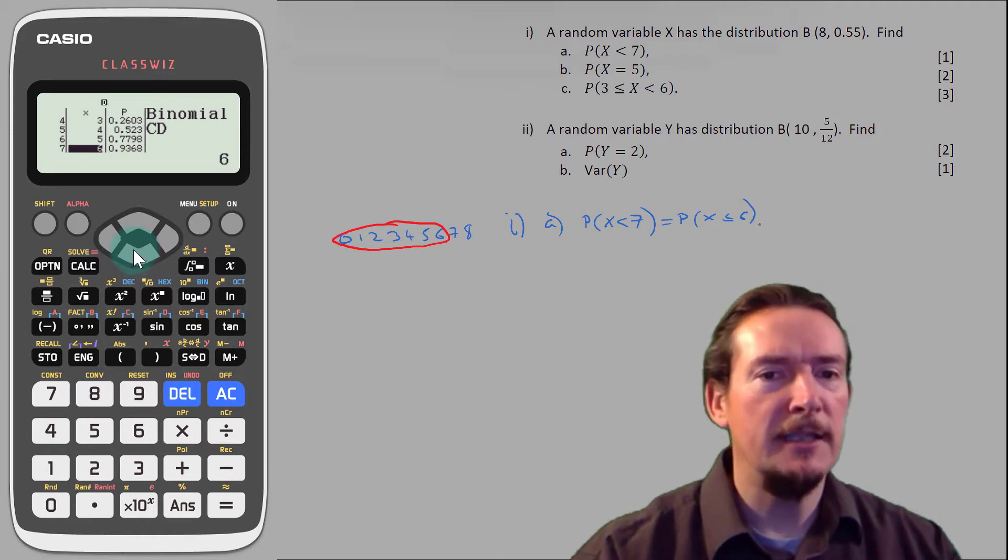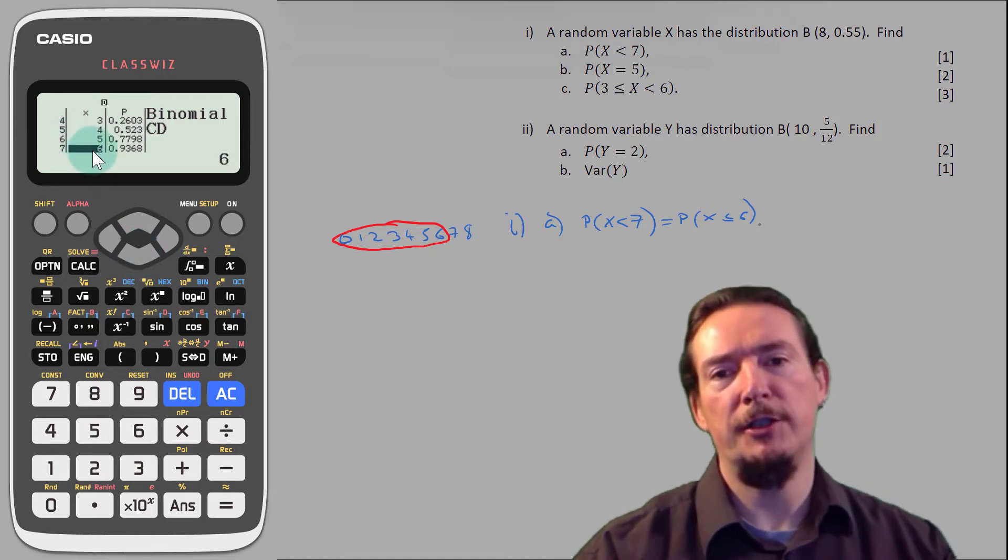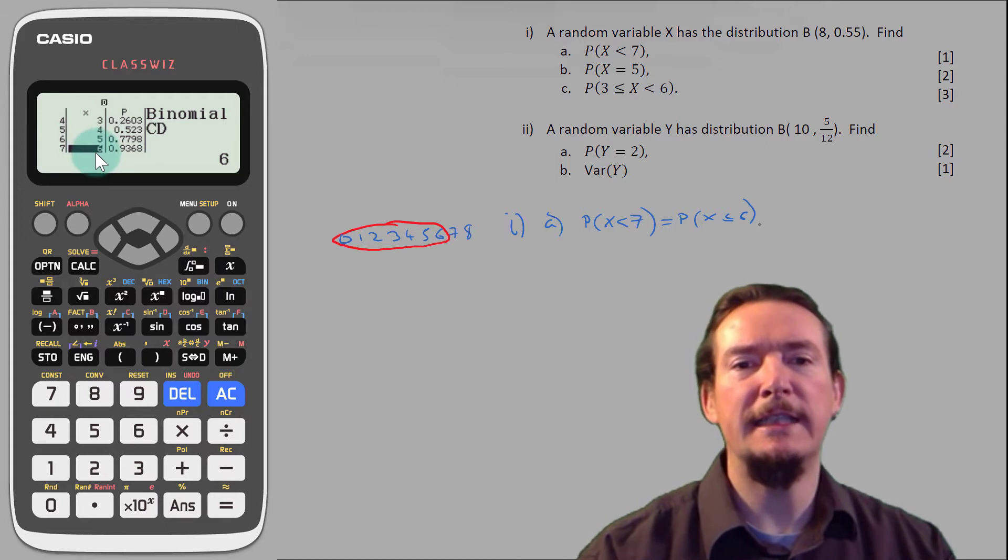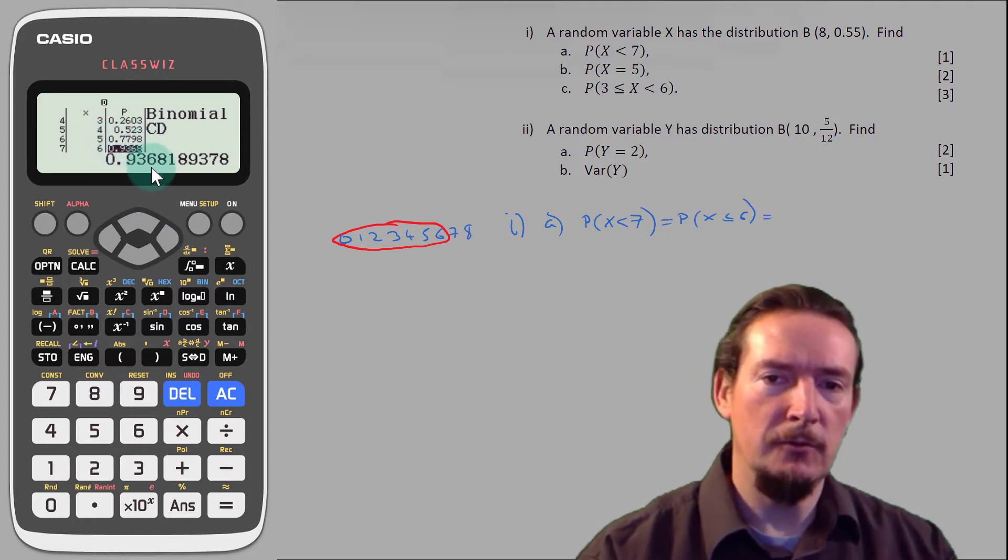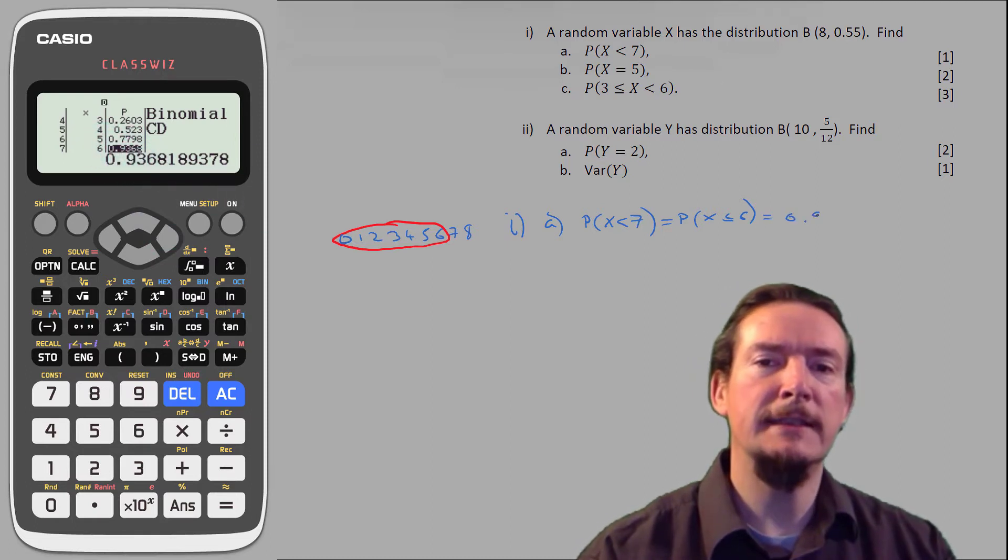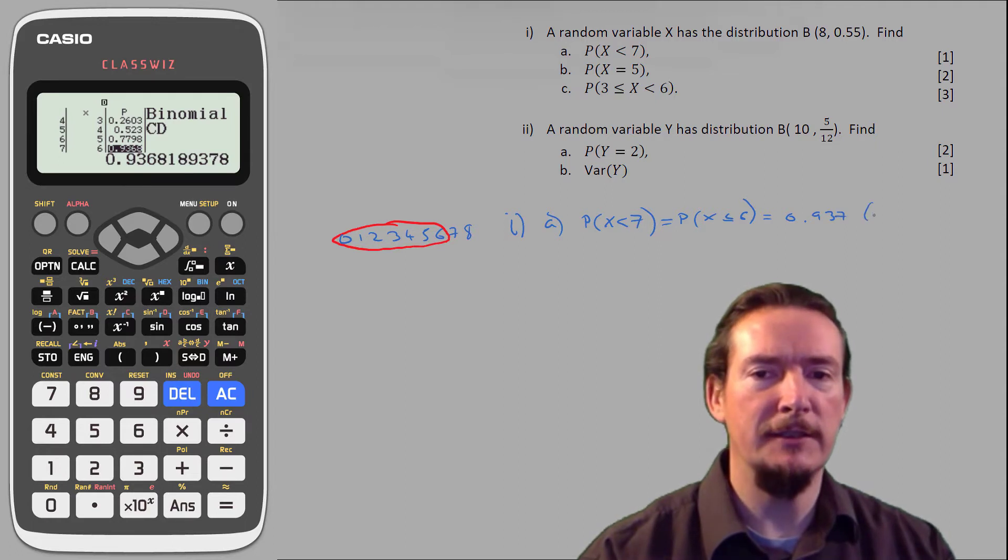We're looking up 6 in this middle column, and then across from there, which is 0.9368, or 0.937 to three significant figures.